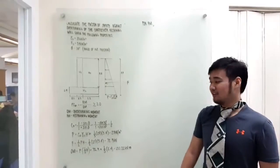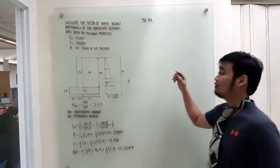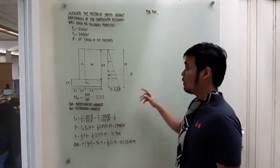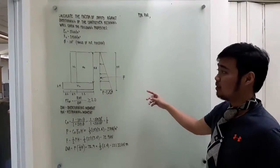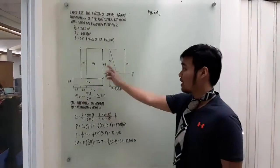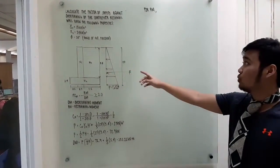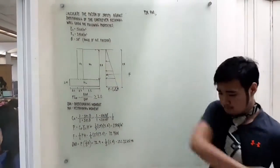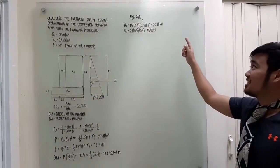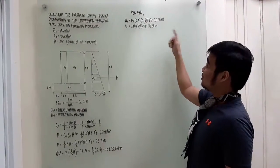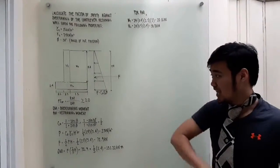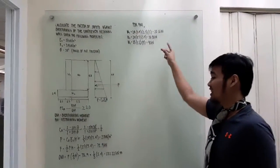Now that we have calculated the overturning moment, we calculate the restraining moment. For the restraining moment, we consider the weight of the whole structure and the weight of the soil. The structure is divided into the top part (W1) and the bottom part (W2). W1 is equal to 20.16 kN and W2 is equal to 38.88 kN. The weight of the soil is 90 kN.